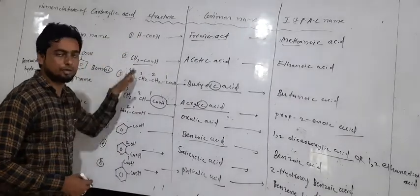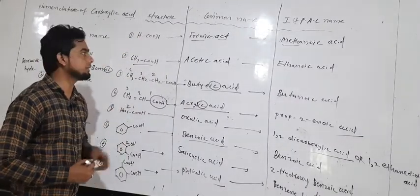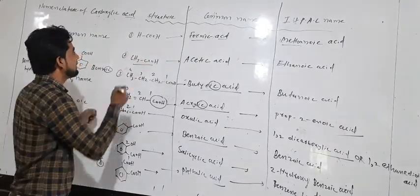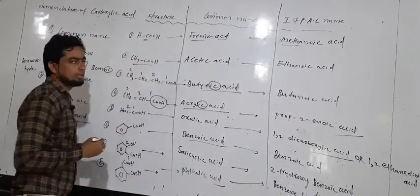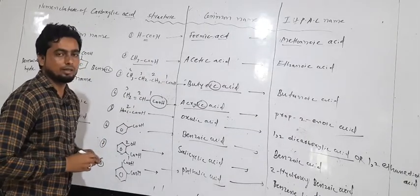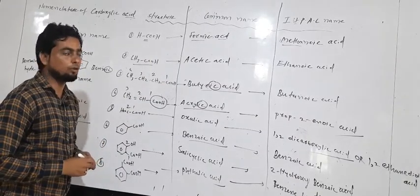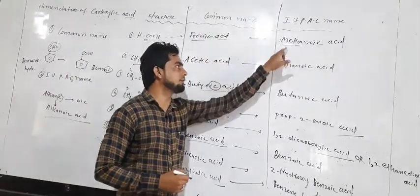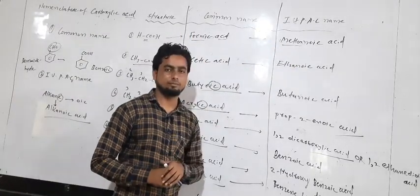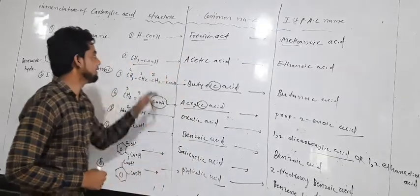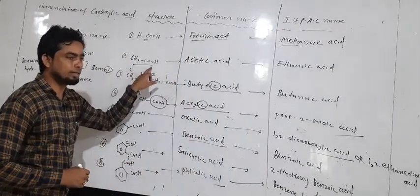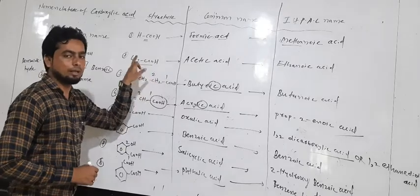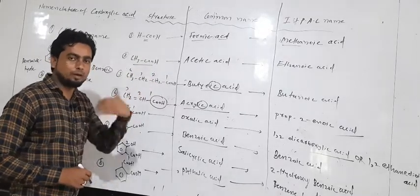For example, we take eight different types of carboxylic acids and write their IUPAC names. The first compound contains only one carbon: methane, with '-e' replaced by '-oic,' giving the IUPAC name methanoic acid. The second example contains two carbons: ethane, with '-e' replaced by '-oic,' giving ethanoic acid.